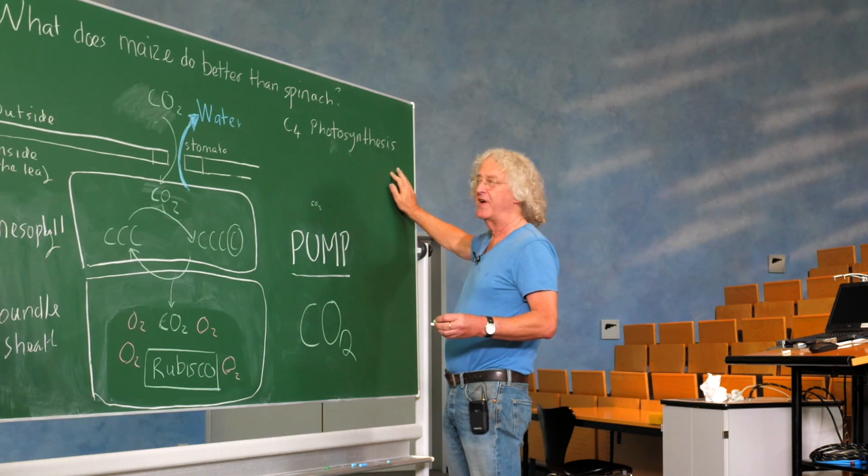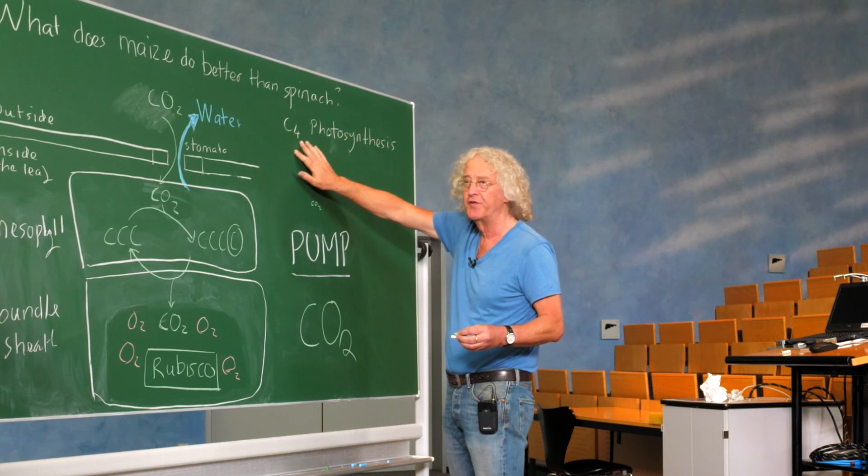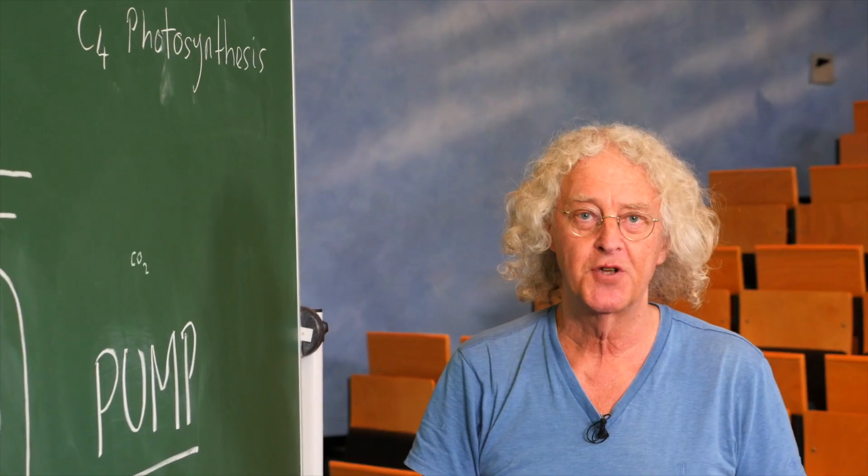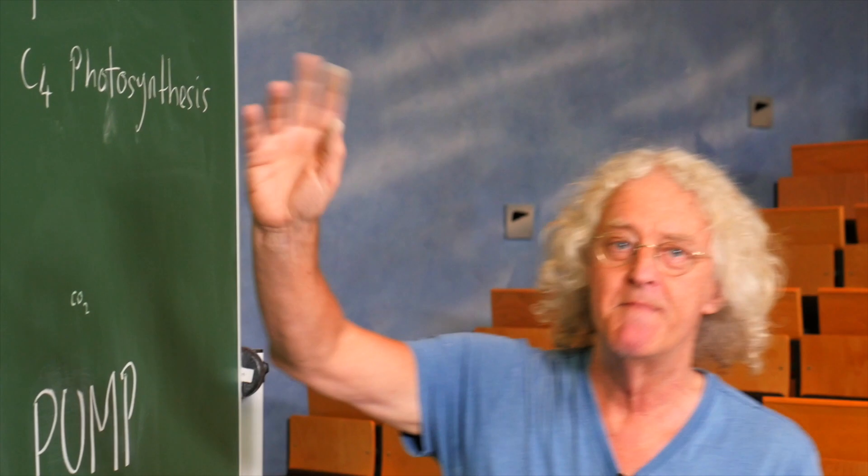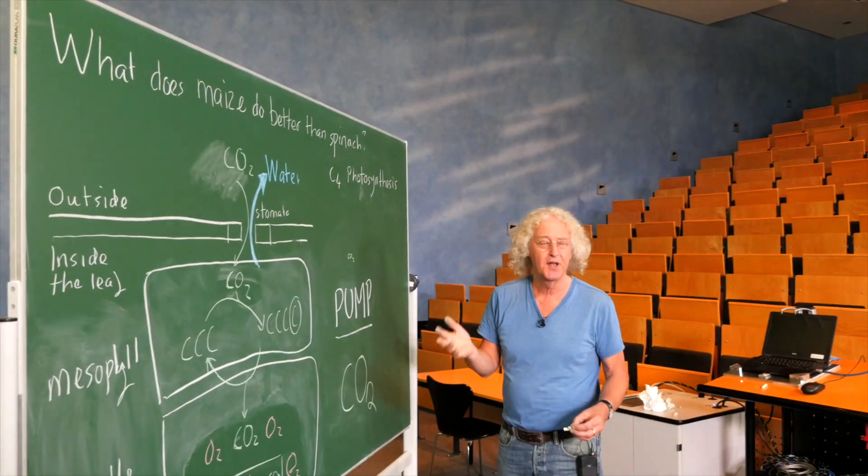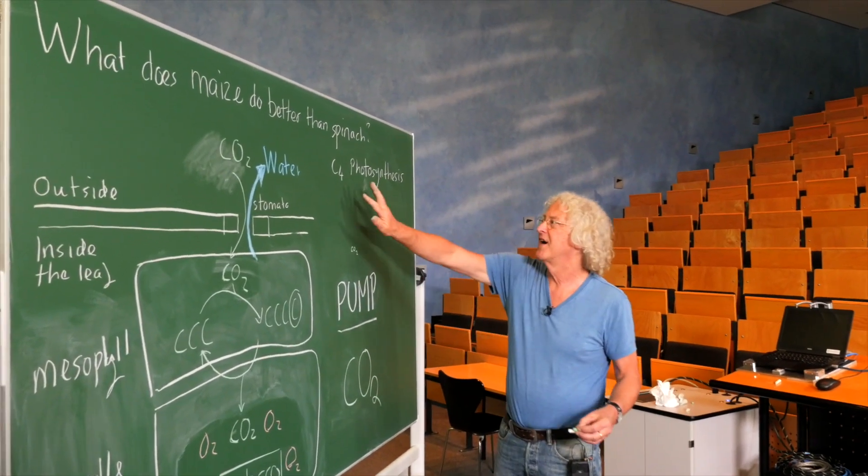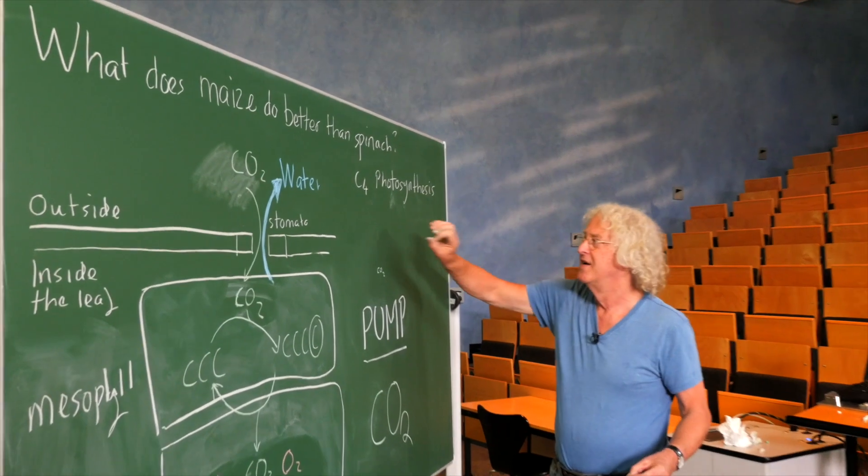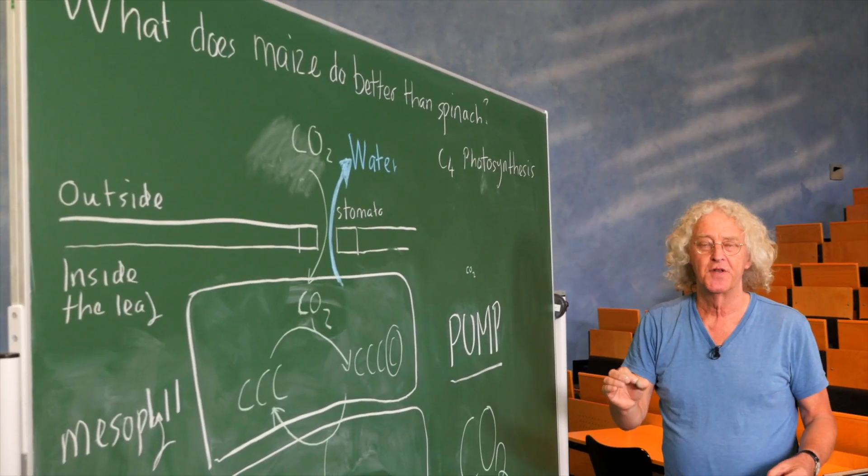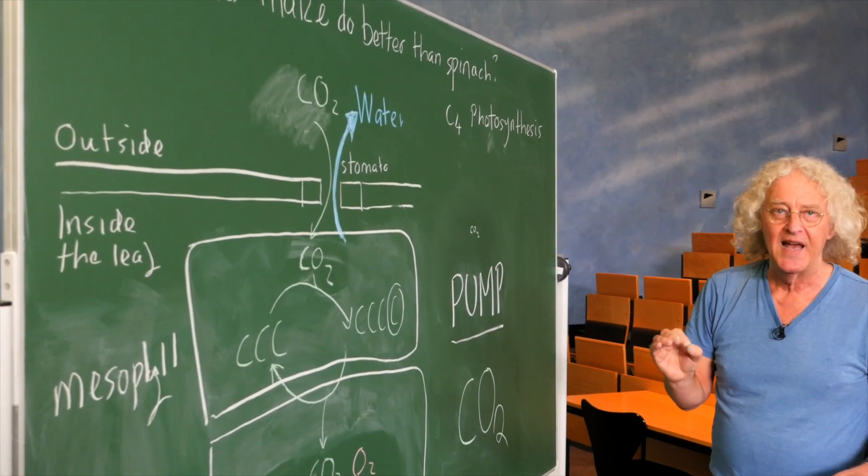These big grasses, fast growing grasses carry out C4 photosynthesis. Some of our most important crops, not only maize, but also crops like sugarcane, sorghum, carry out C4 photosynthesis. They have high rates of photosynthesis, and they use less water.